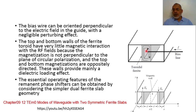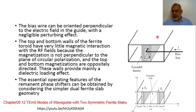The bias wire is oriented in the Z direction, and the electric field is in the Y direction, so the electric field is perpendicular to the excitation wire. In this case, the effect of the excitation wire on the electric field is nearly negligible. The bias wire can be oriented to be perpendicular to the electric field in the waveguide — wire in Z, electric field in Y — which introduces a negligible perturbation effect on the electric field.